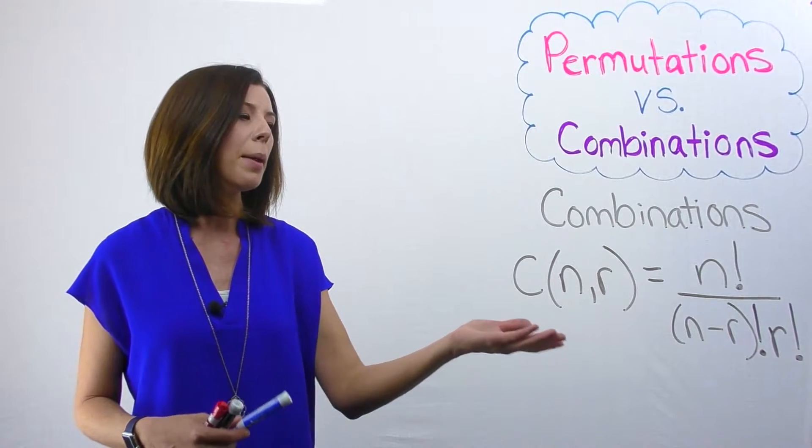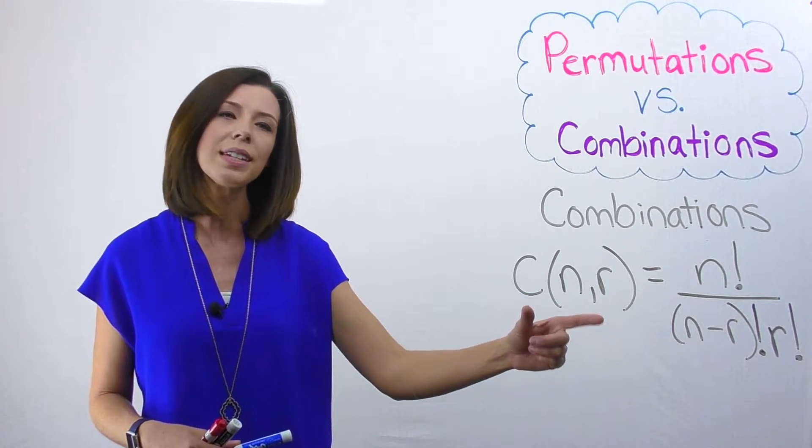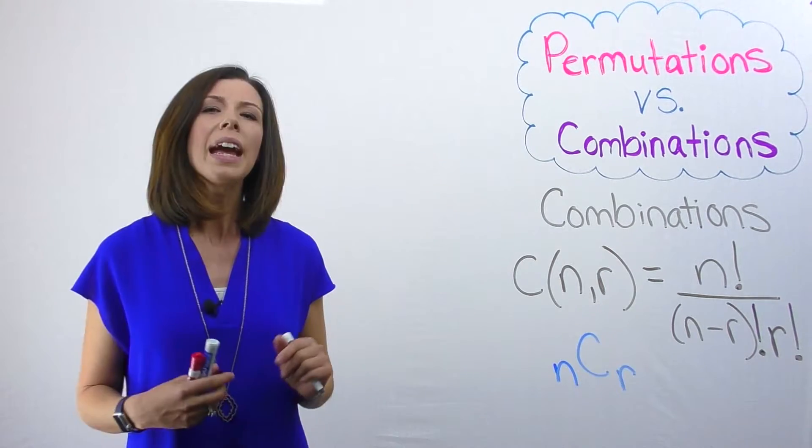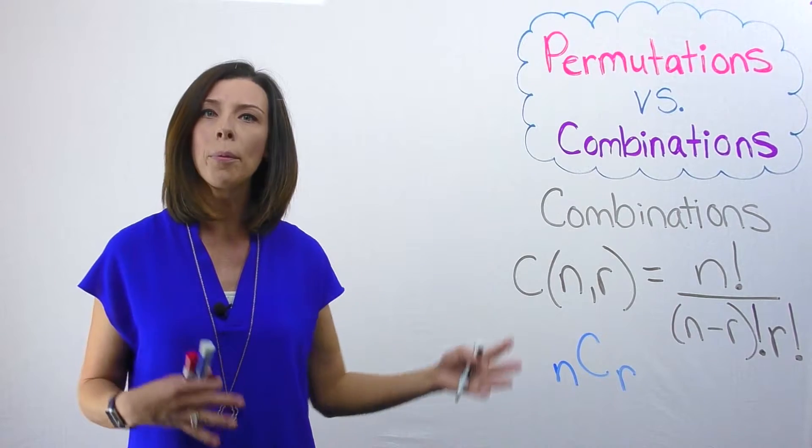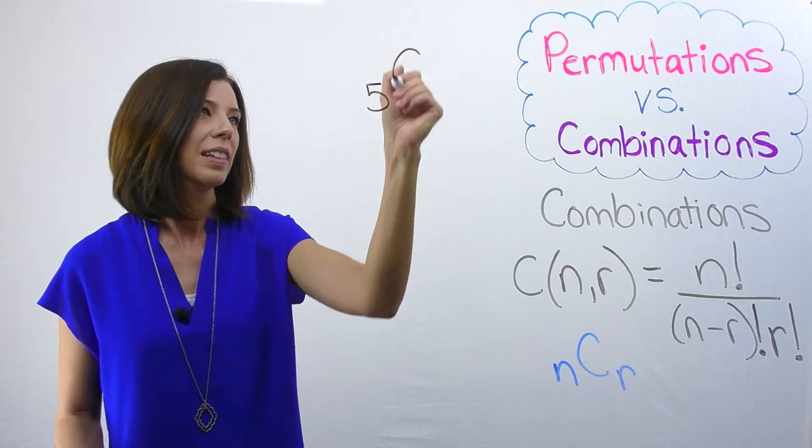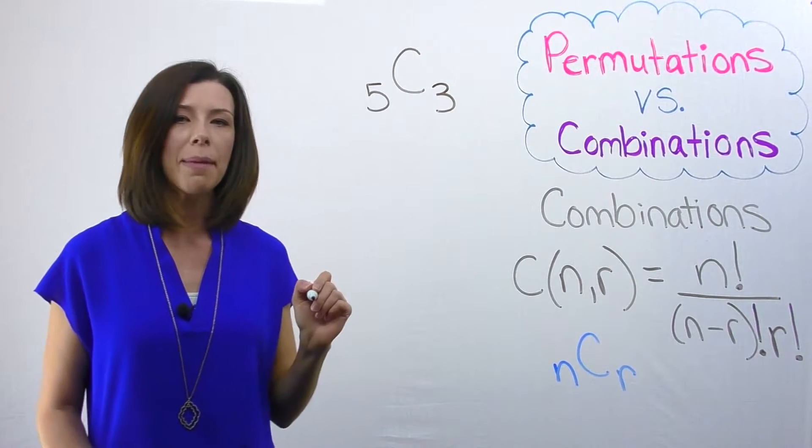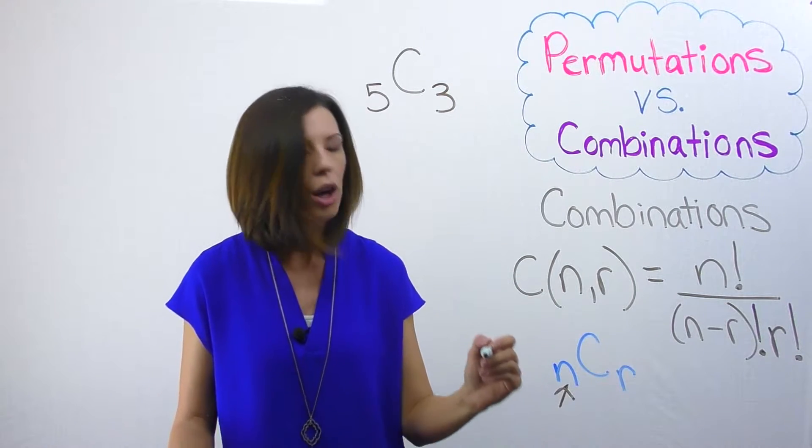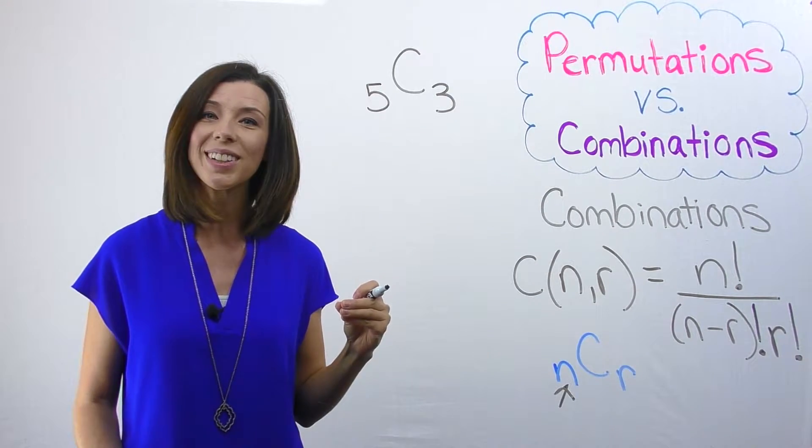As you can see, I went ahead and put the combinations formula here. There's another way that you commonly see this notation. In this case, N is the number of people in the whole pool that we're picking from. In this case, it's going to be five. We want to choose three people from that pool, so that is going to be my R. N is your total possible number of people for your pool. R is how many people you're selecting.